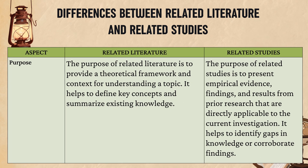The purpose of related literature is to provide a theoretical framework and context for understanding a topic. It helps to define key concepts and summarize existing knowledge. When we read related literature, we can learn what other people have discovered about our topic, helping us know what is already known and what we might need to investigate further.